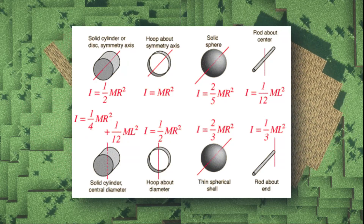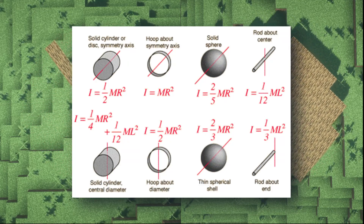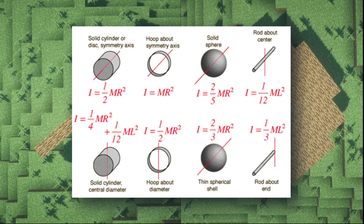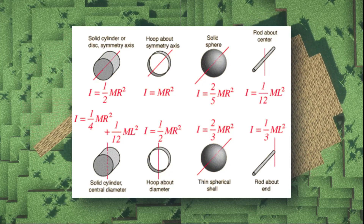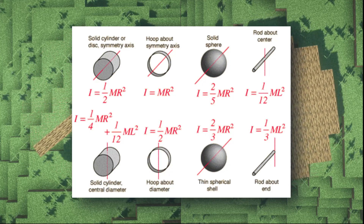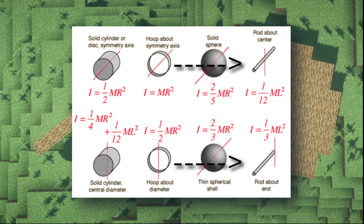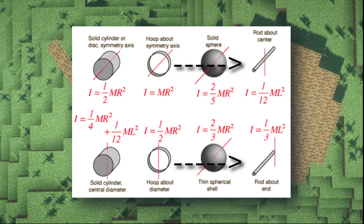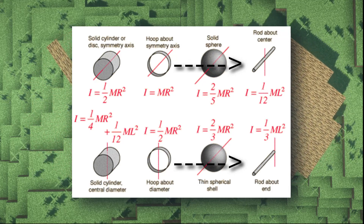Now it's very important to note each of the pivot points that they use, and how moving the pivot point changes the rotational inertia. You can see with the stick: if the pivot point is through the center it's 1/12th, but if it's through the end, it's 1/3rd.